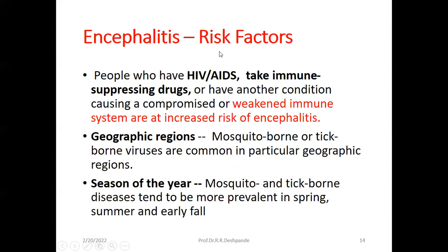People who have HIV or AIDS infection, who are taking immunosuppressive drugs, or who have another condition causing a weakened immune system are at much greater risk for encephalitis. Geographical factors also play a role — mosquito-borne or tick-borne viruses are common in particular geographical regions. Mosquito and tick-borne diseases tend to be more prevalent in spring, summer, and early fall.